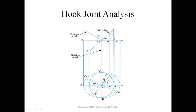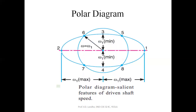Here theta is the angular displacement done by fork AB, and phi is the angular displacement done by fork CD, which is attached to the driven shaft. After analysis to find minimum and maximum speed, this polar diagram shows that fork AB travels a circular path and fork CD travels an elliptical path.